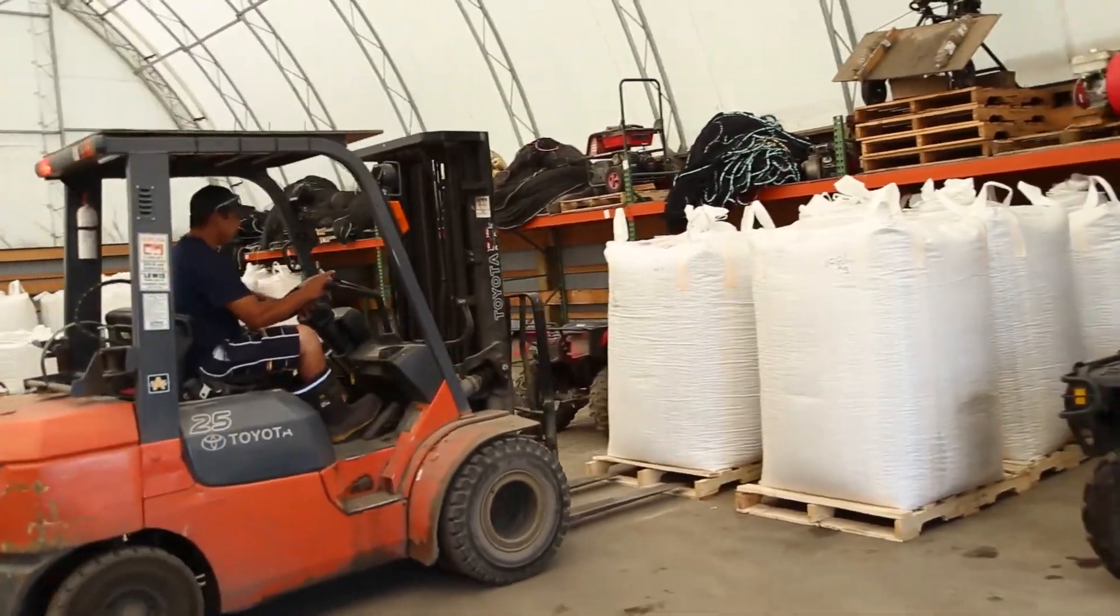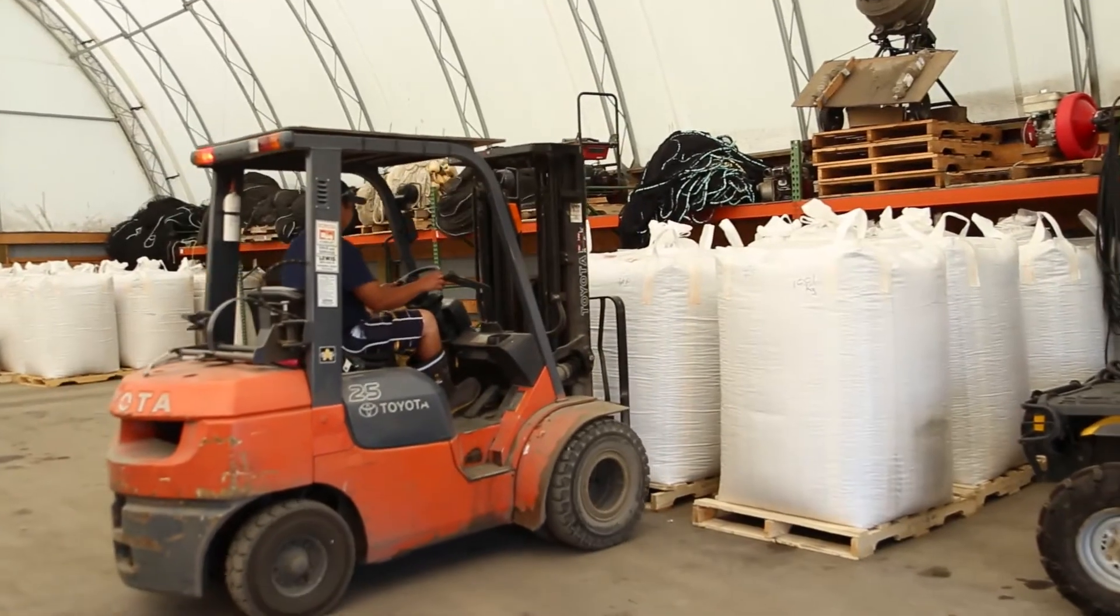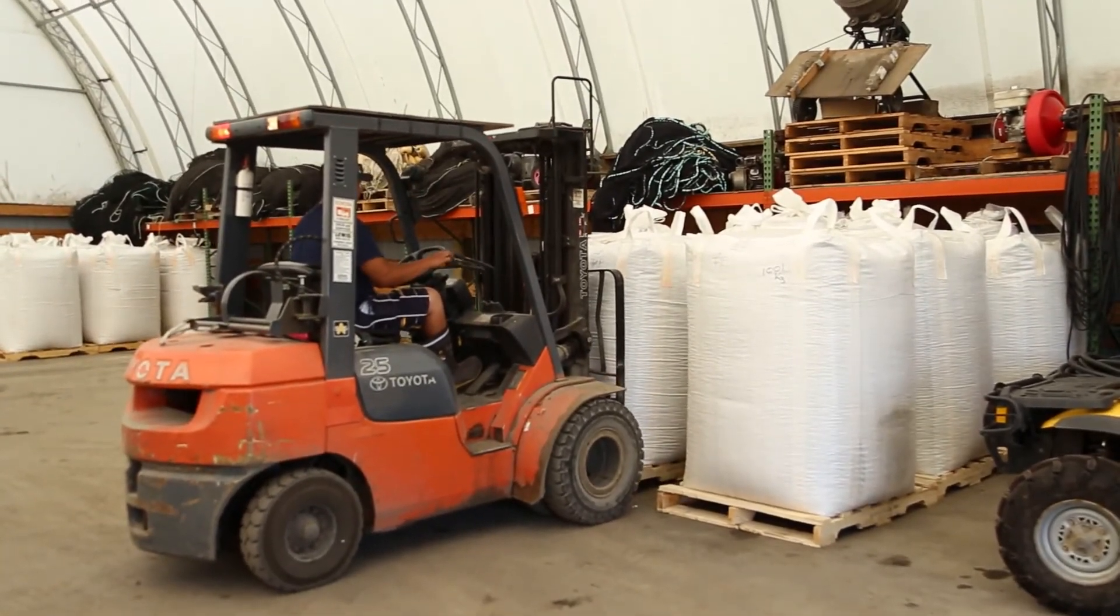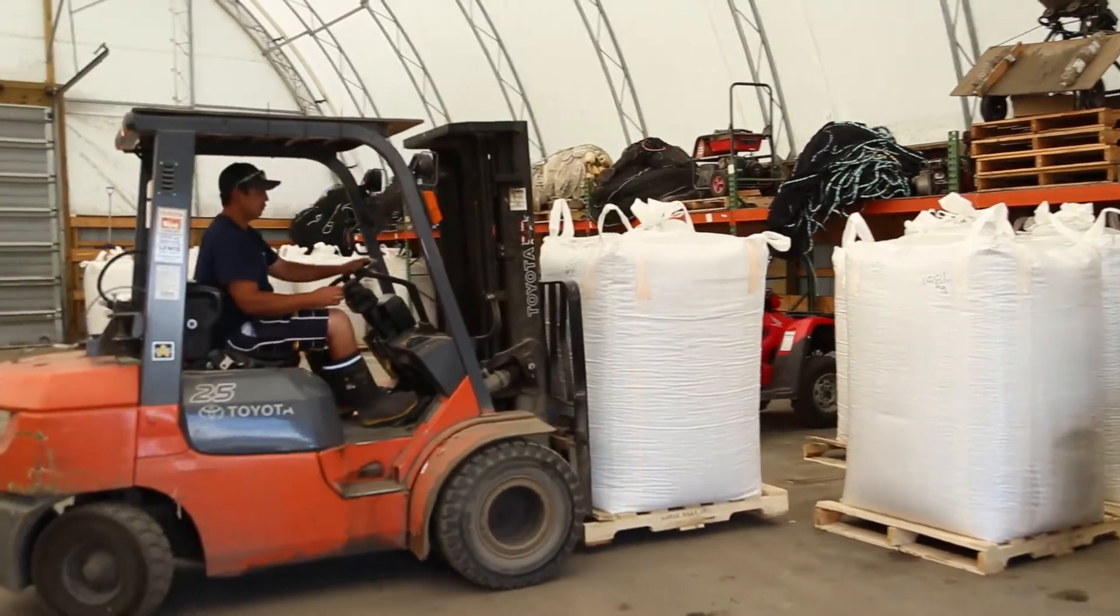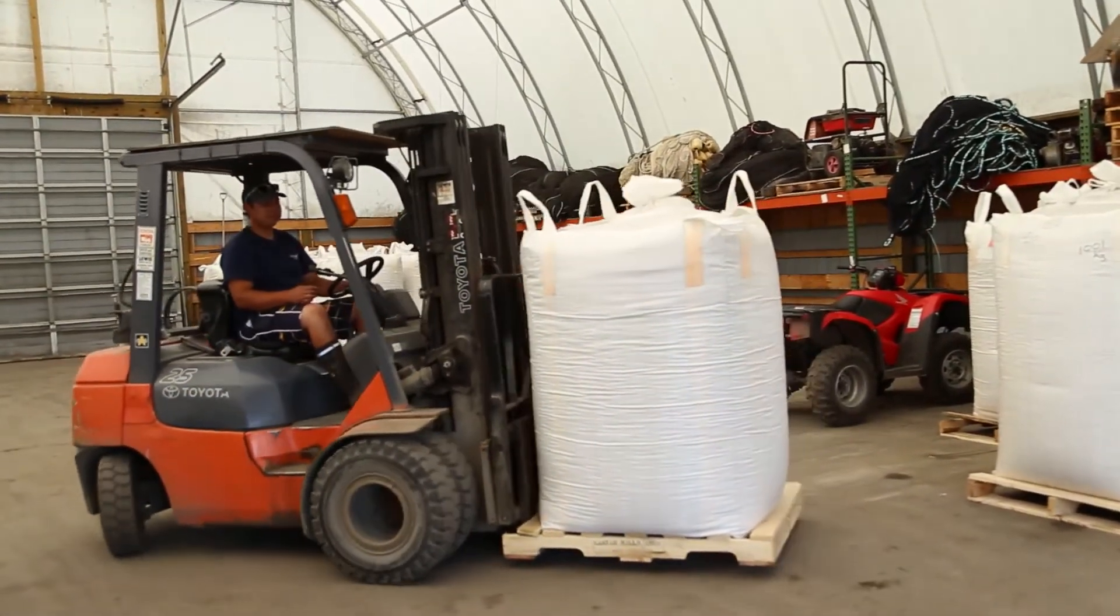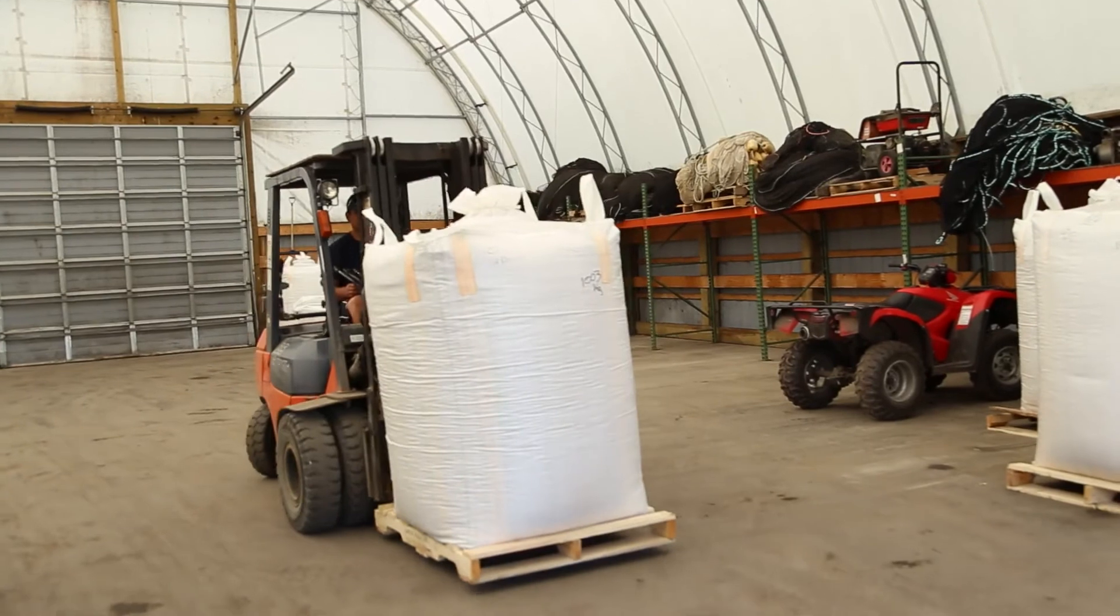Our feed comes in the one ton bags and in the winter we fill it into bins and it's all hand fed. And as you've seen in the feeding boats, it's loaded into the bins in one ton bags. So this is the largest you can order feed in.